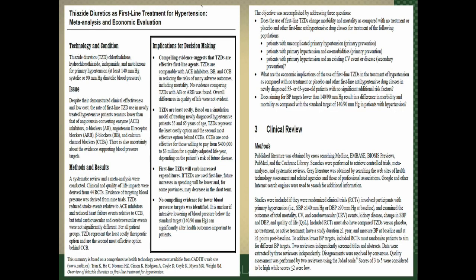This is an example of a systematic review on a similar topic to the narrative review shown earlier. You can see they have very explicit and specific questions they're going to answer with the review. As the review goes on, there is a method section which outlines how the authors went about finding studies to include, how they put it all together — very different from a narrative review.